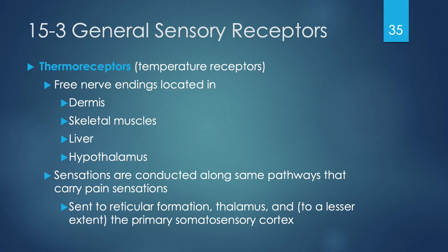Thermal receptors are receptors with specificity for temperature, located in free nerve endings in the dermis of the skin, skeletal muscles, liver, and hypothalamus. These sensations travel along the same pathways that carry pain — which makes sense because heat can cause pain, and extreme cold, the absence of heat, can also cause pain.